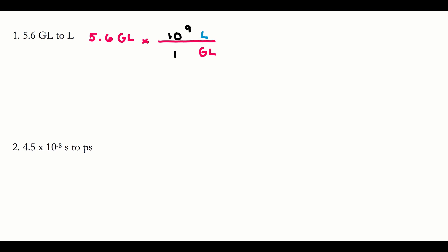So I'm going to take 5.6 and multiply by 10 to the ninth, which gives me my final answer: 5.6 times 10 to the ninth liters. Sig fig check: 5.6 has two sig figs, and 5.6 still has two sig figs. I included the correct units, so I can move on to the next problem.